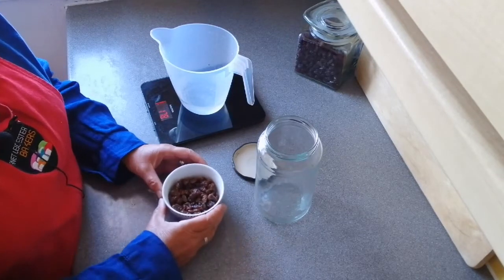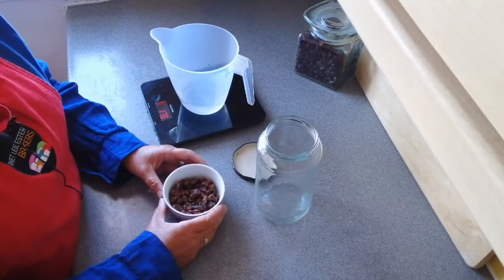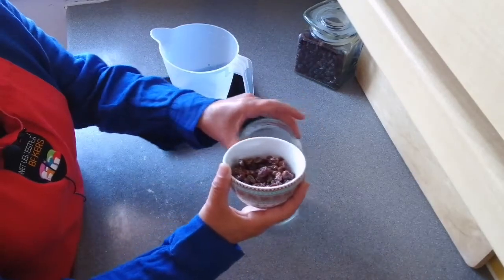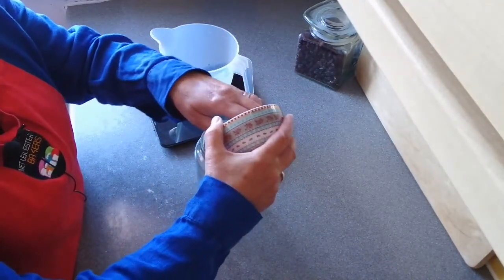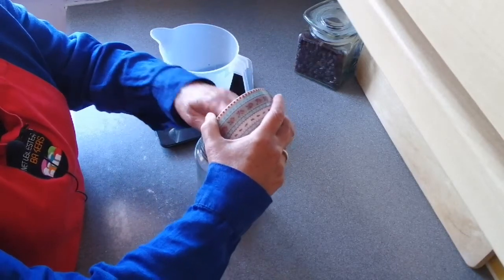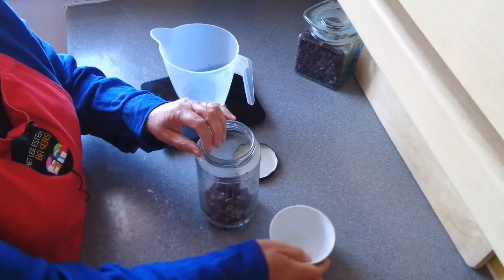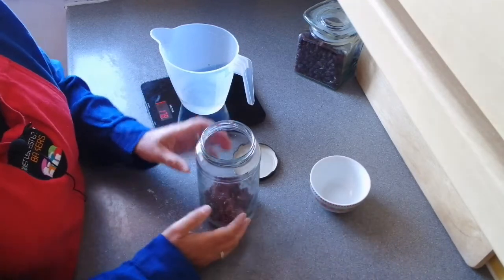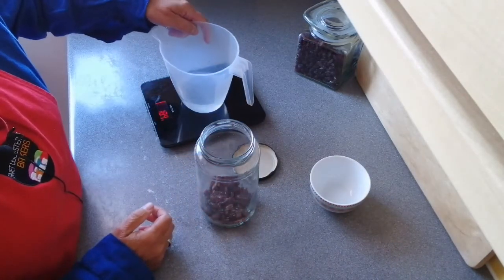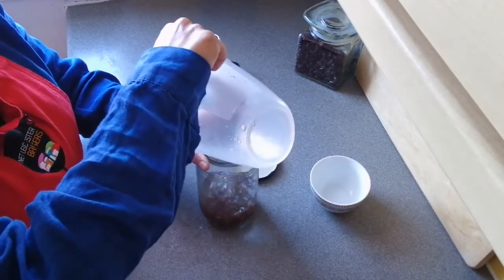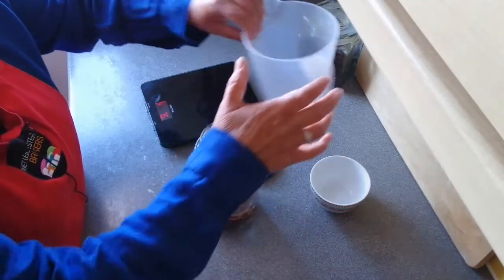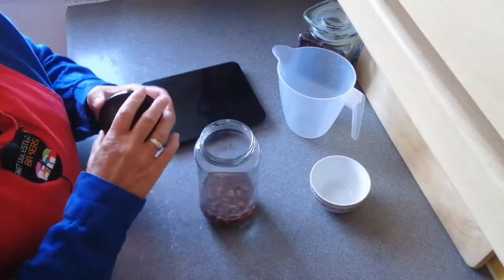Once you have your 57 grams of raisins, all you need to do is pop them in your clean jar. Then take your tepid water and pour that in, and pop the lid on loosely.